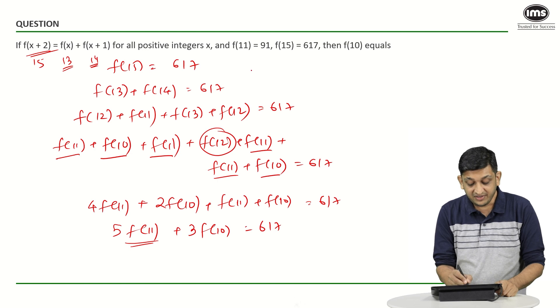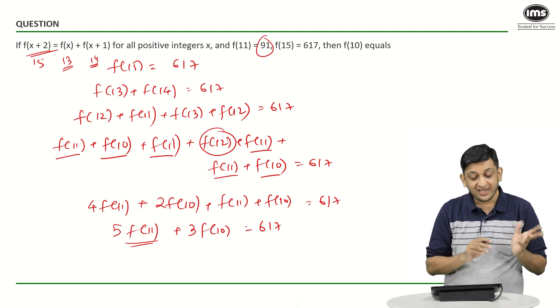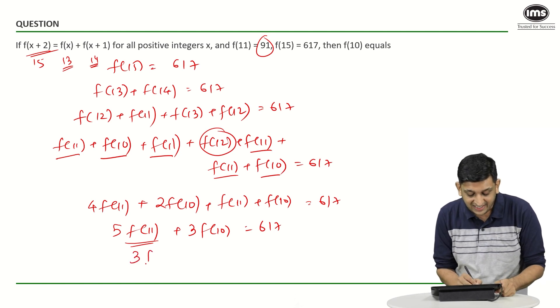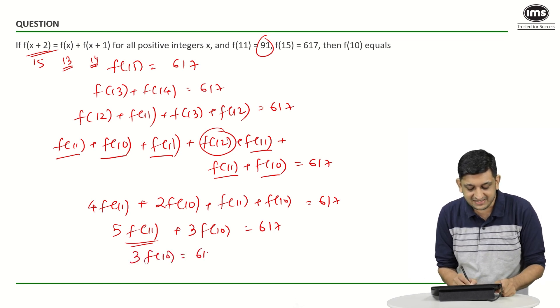Now, f(11) is known to us as 91. What is 5 times 91? 455. So we can say that 3 times f(10) will be 617 minus 455.